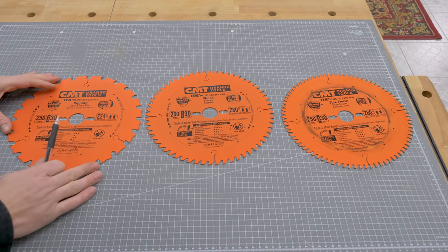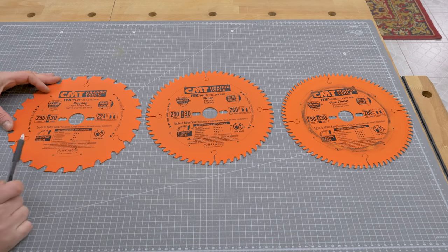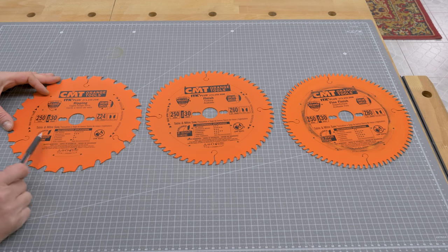The first one has 24 teeth and is perfect for ripping solid wood boards, but not that great for cross cuts or cutting boards.